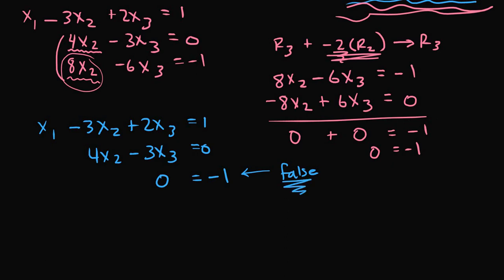So therefore, since we have a false equation here, this implies that this system of linear equations has no solution. And since this system has no solution, we call it an inconsistent system. No solution means no solution set.